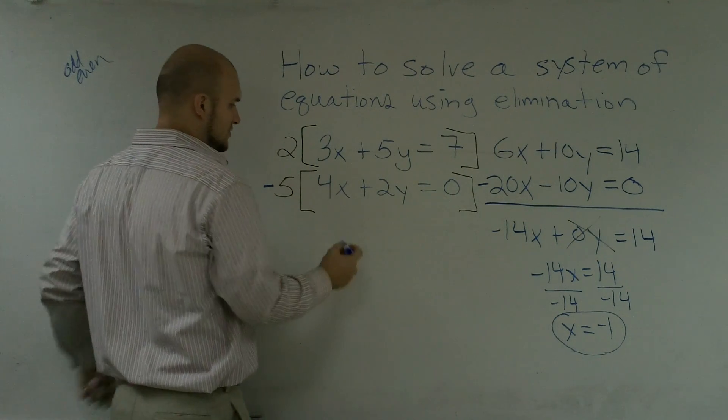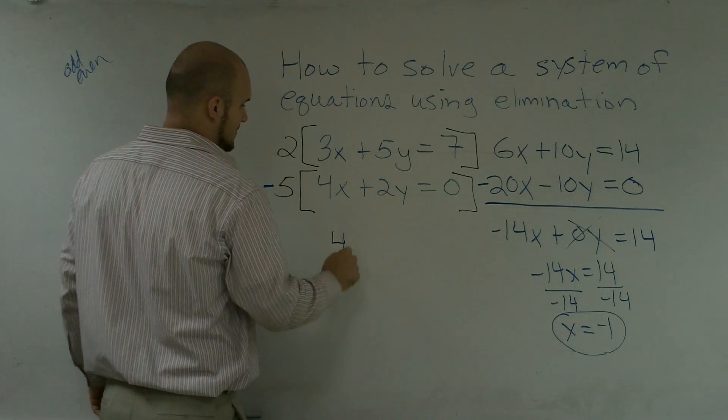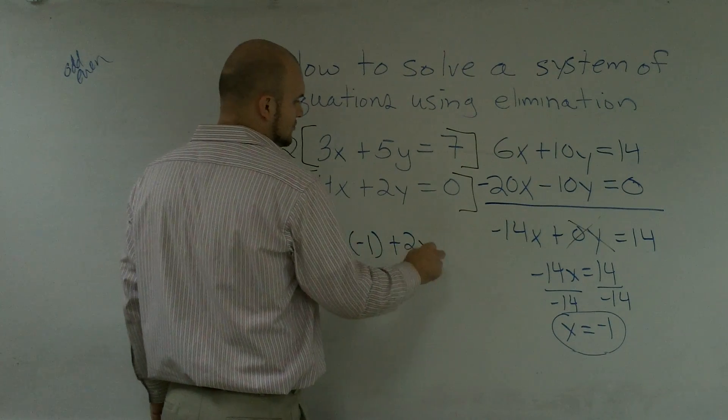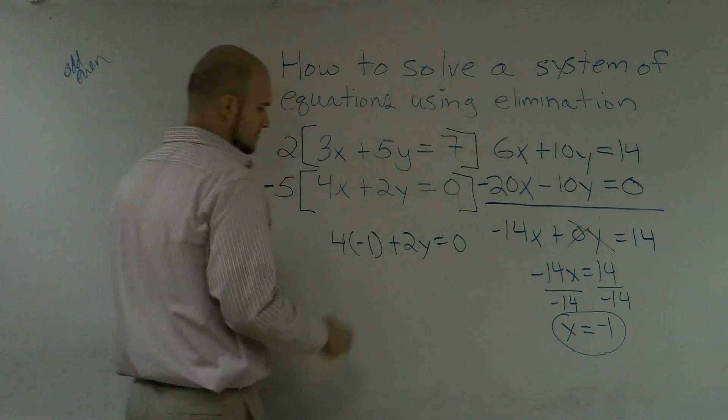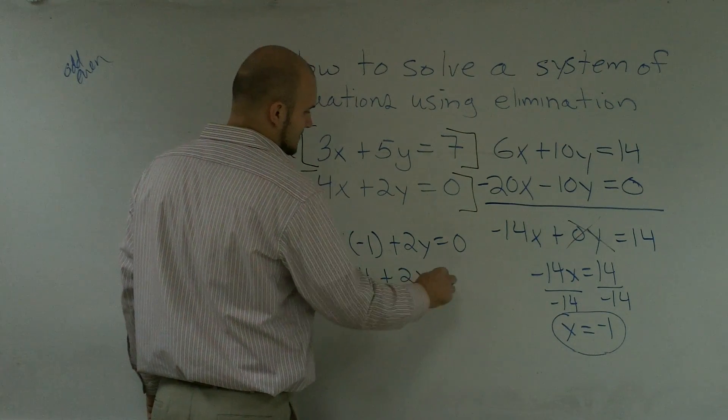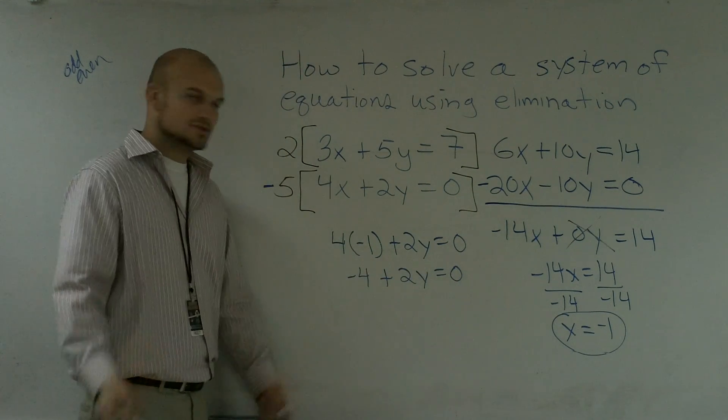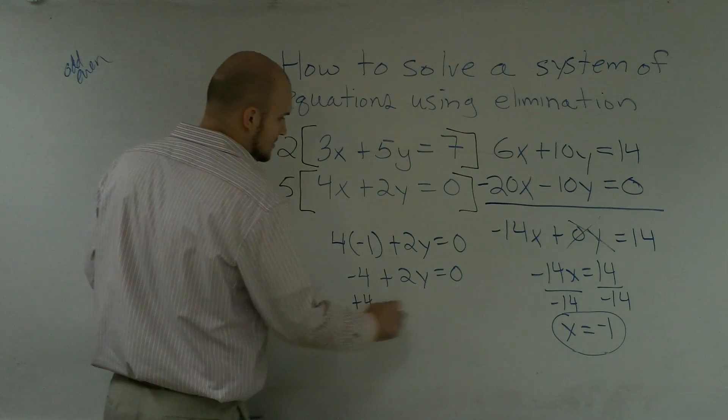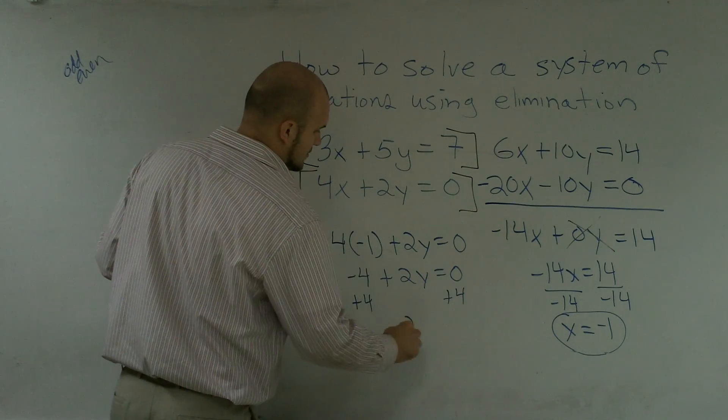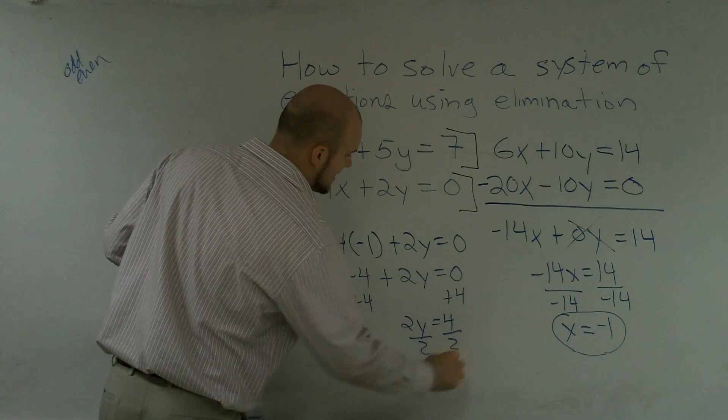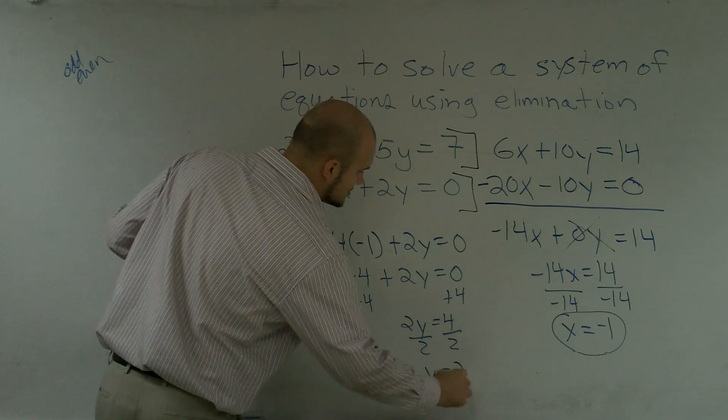I'm going to decide to plug it in for the second equation. So I say 4 times x, which now equals negative 1, plus 2y equals 0. This becomes negative 4 plus 2y equals 0. Now you're up to a two-step equation. You do the reverse order of operations. You add 4. 2y equals 4. Divide by 2. Y equals 2.